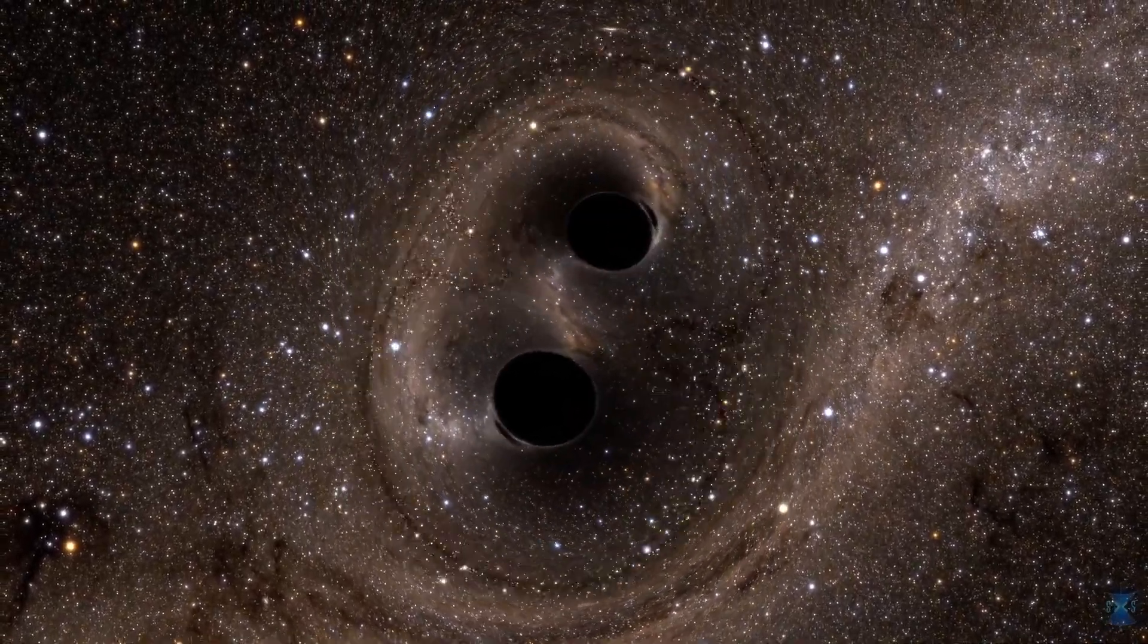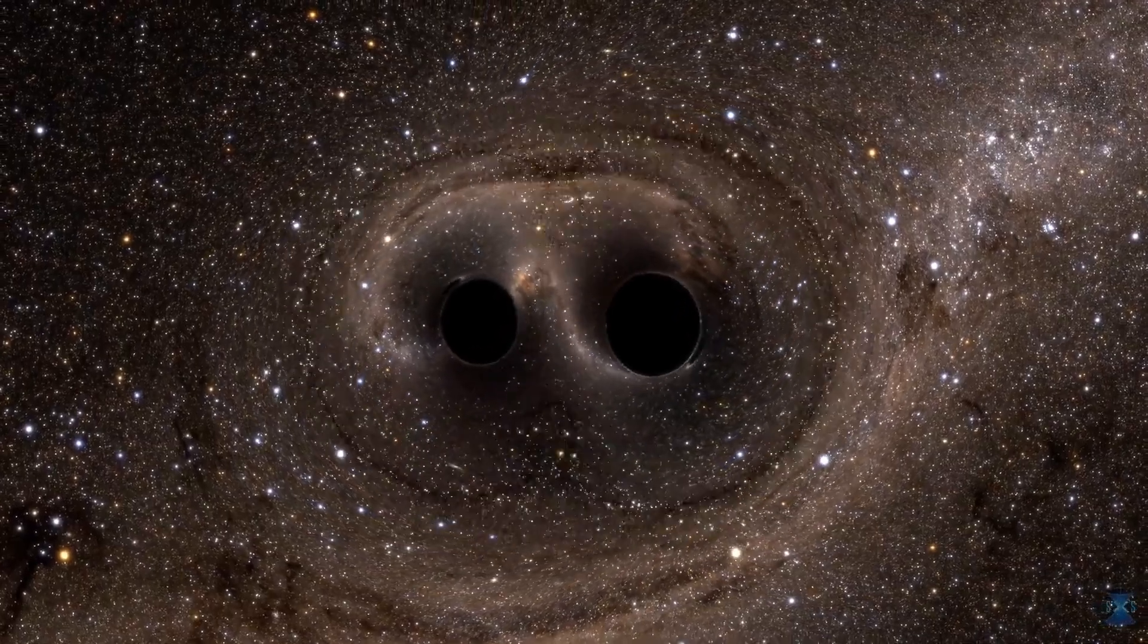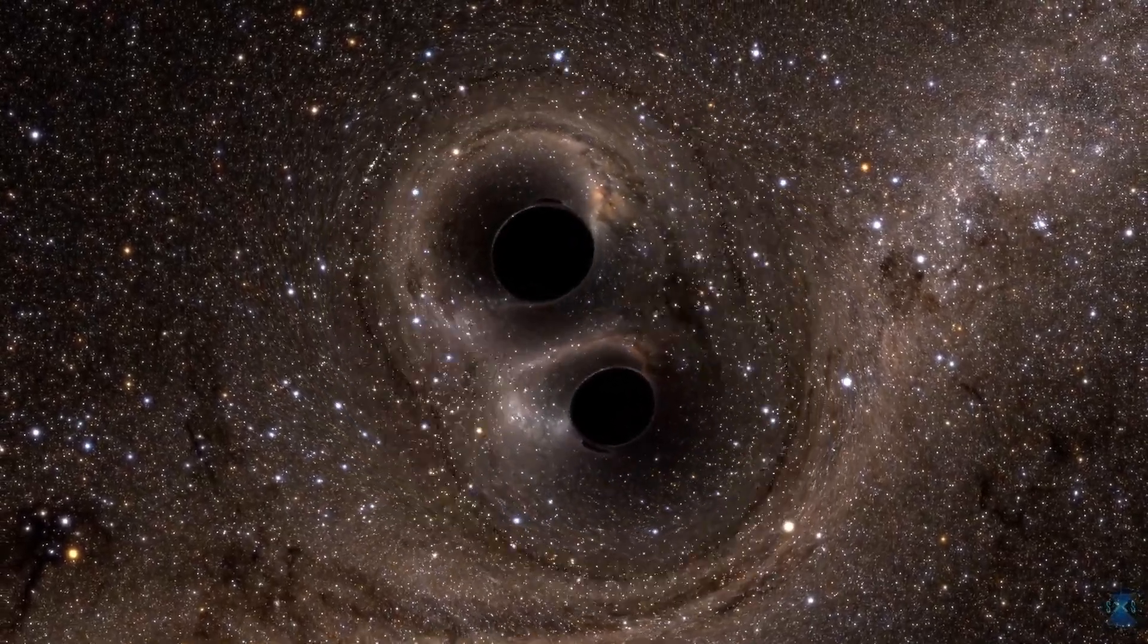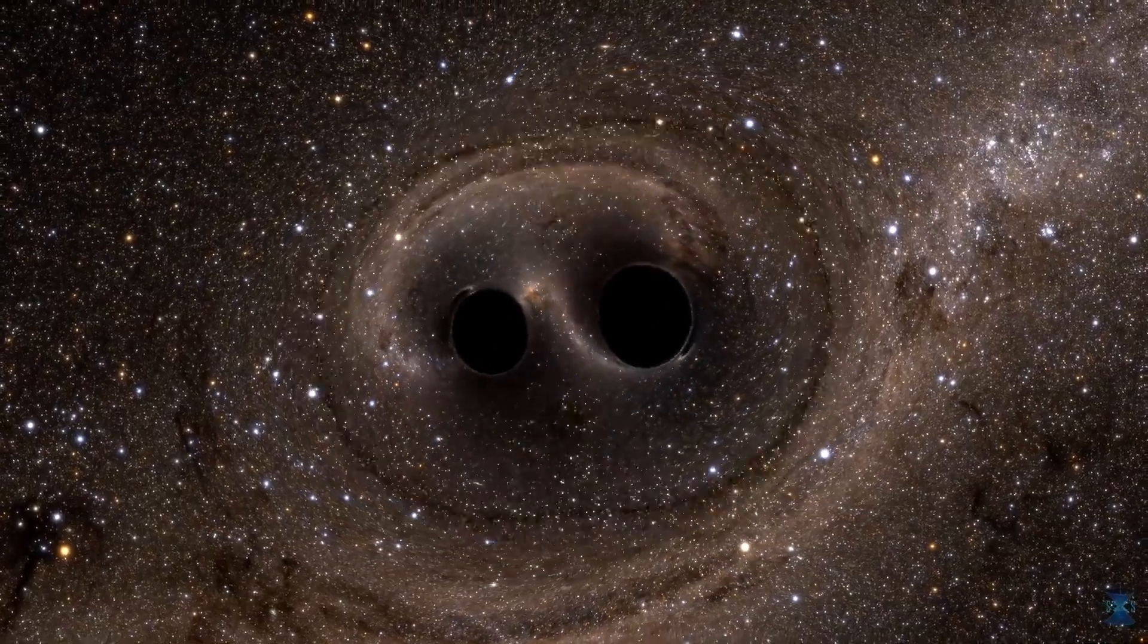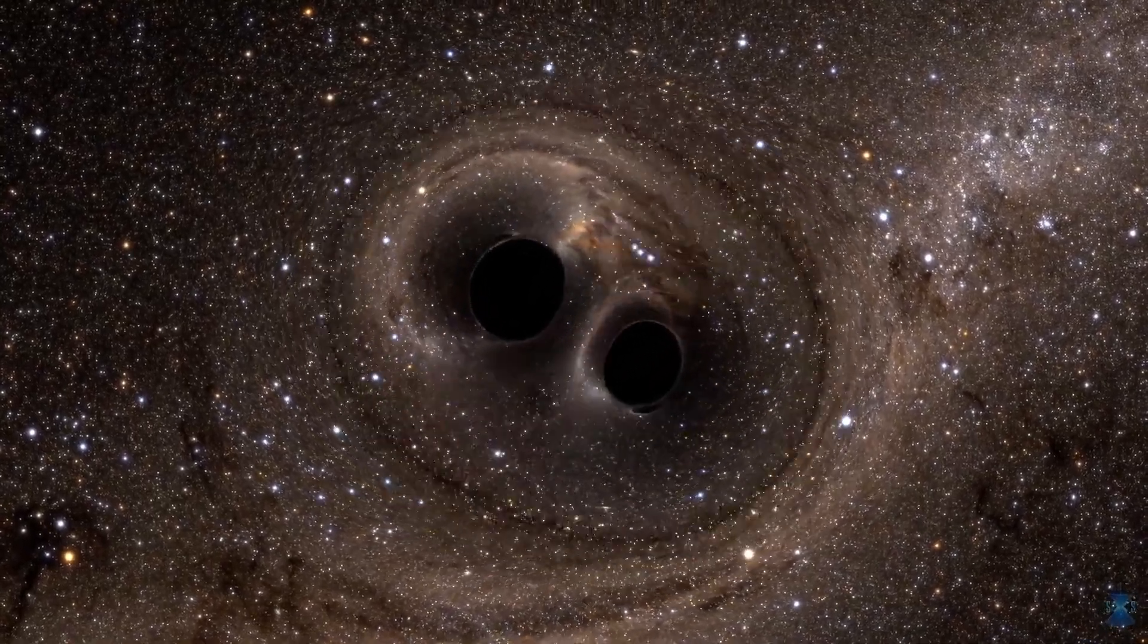Dubbed GW150914, the gravitational waves detected by LIGO are consistent with the merger of 36 and 31 solar mass black holes at a distance of 1.3 billion light-years.